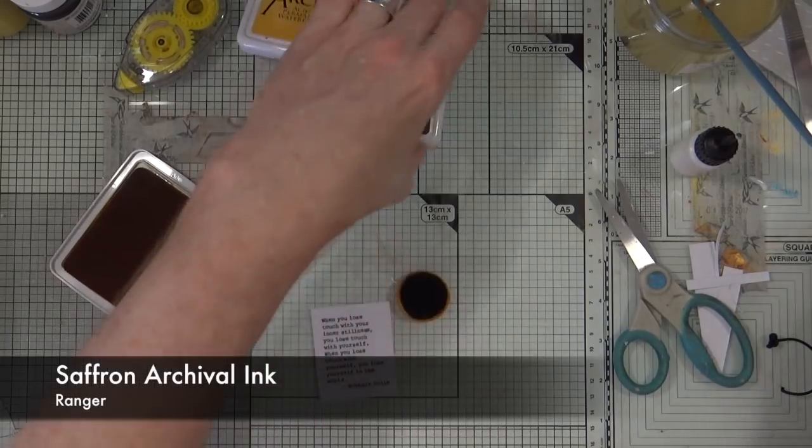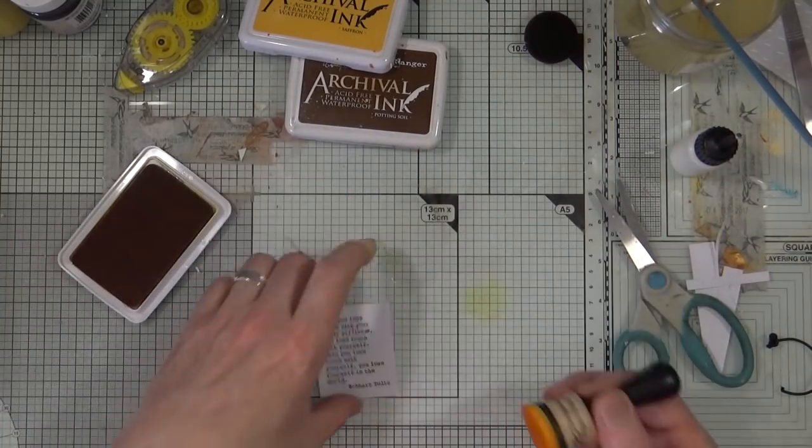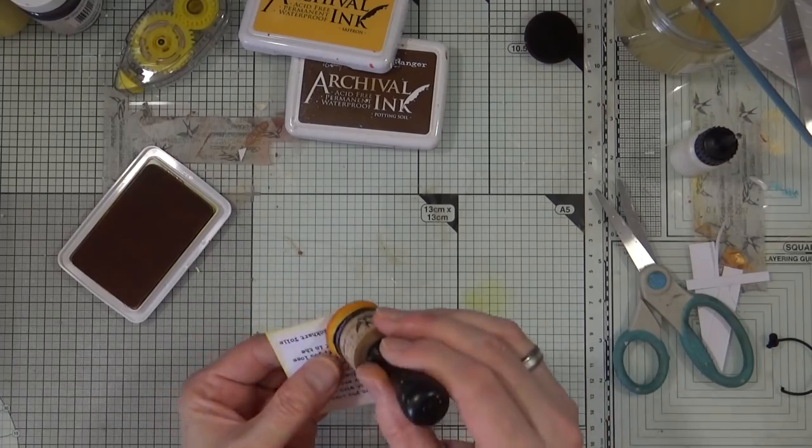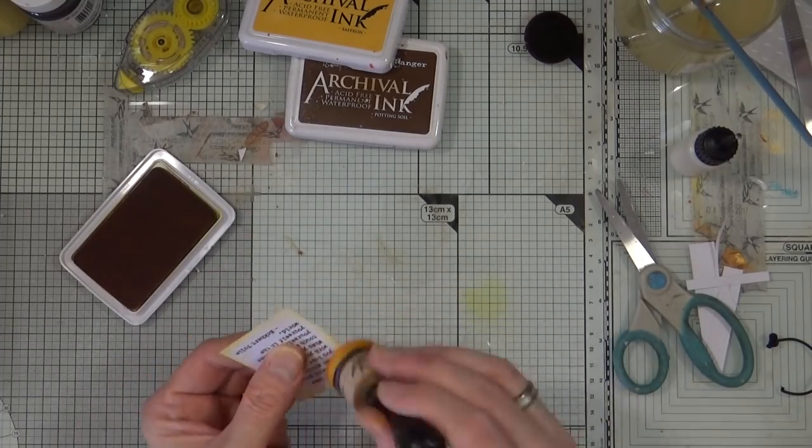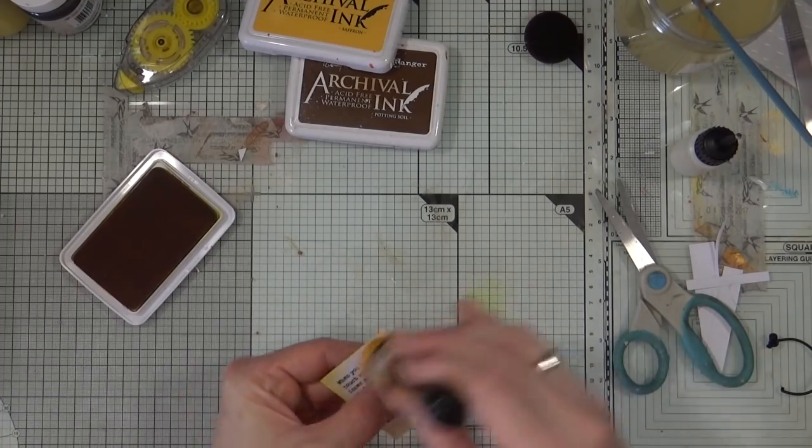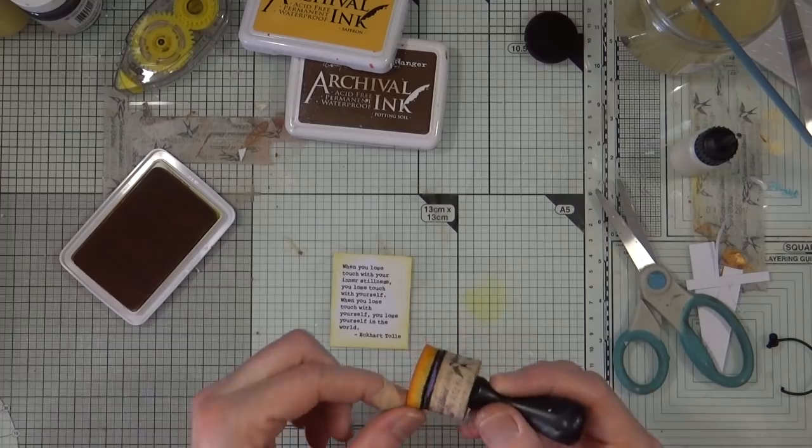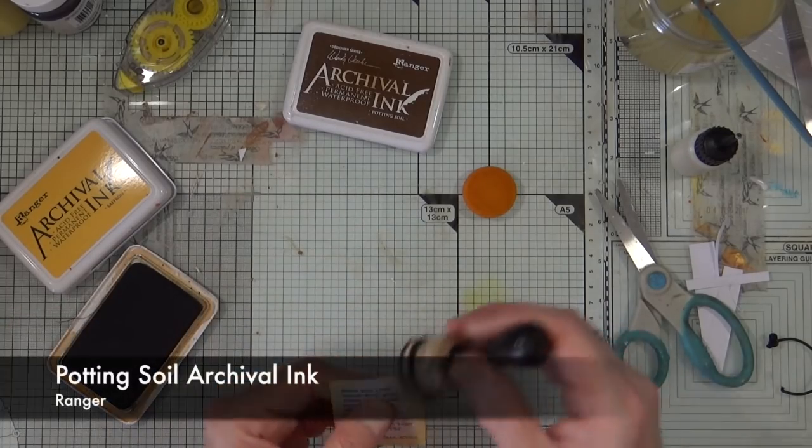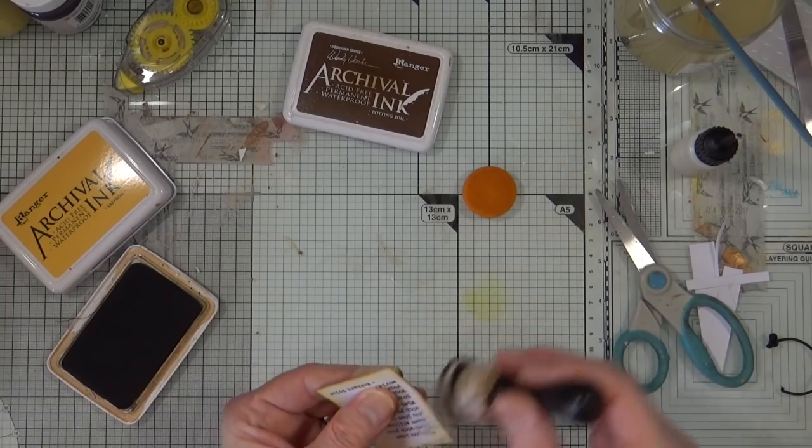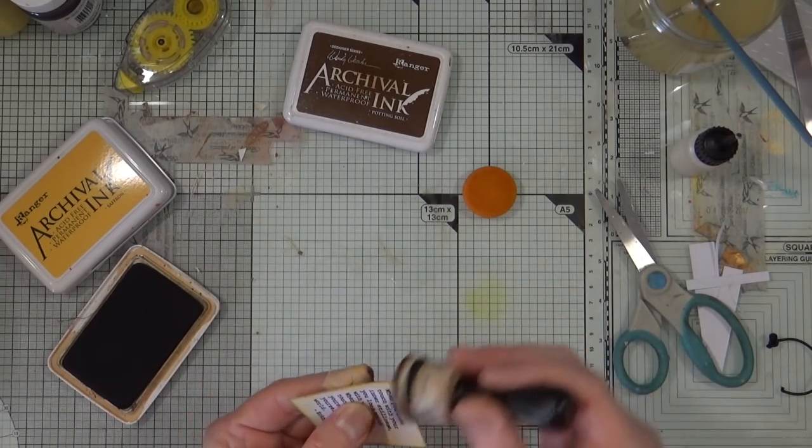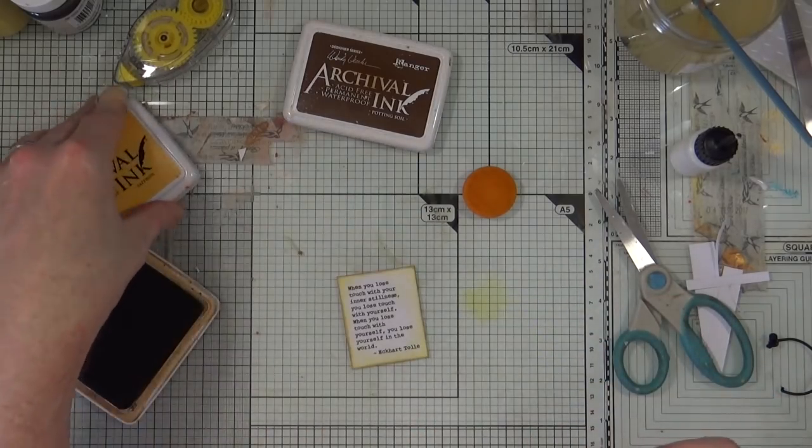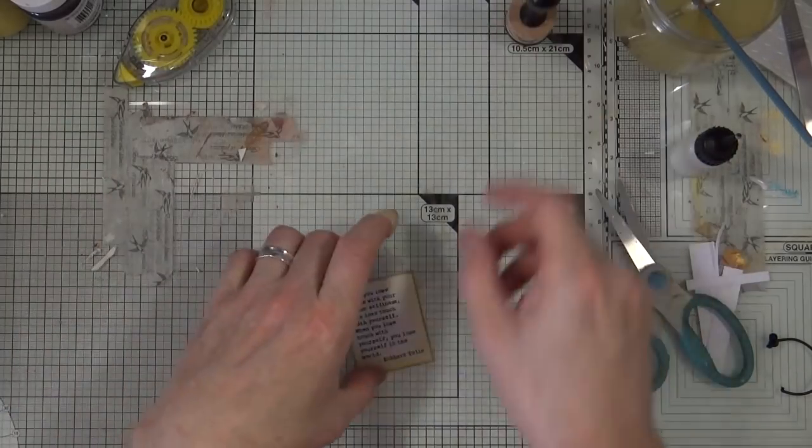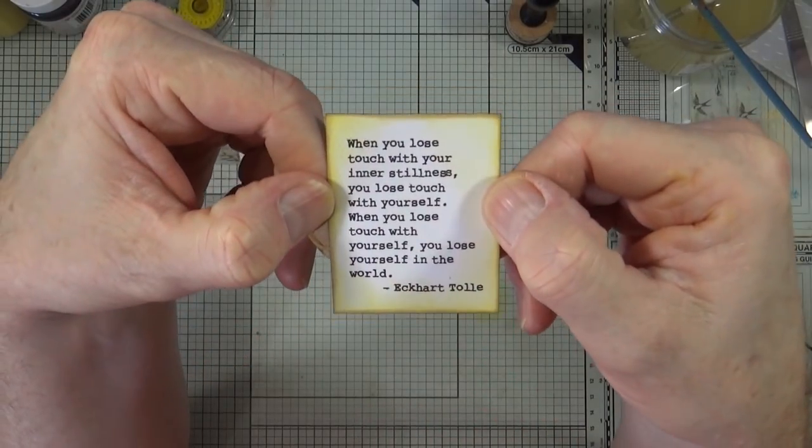I do want to add some color around the edges. For that I'm going to use the saffron archival ink and a blending foam. I'm just going to go around the edge with the saffron ink which kind of mirrors the yellow ochre that I've already used in the page. When I've got that color down, I'm just going to finish off and edge my little quote block with the potting soil archival ink too. Some of you will want to know what the quote says so for that I will hold it up for a second.